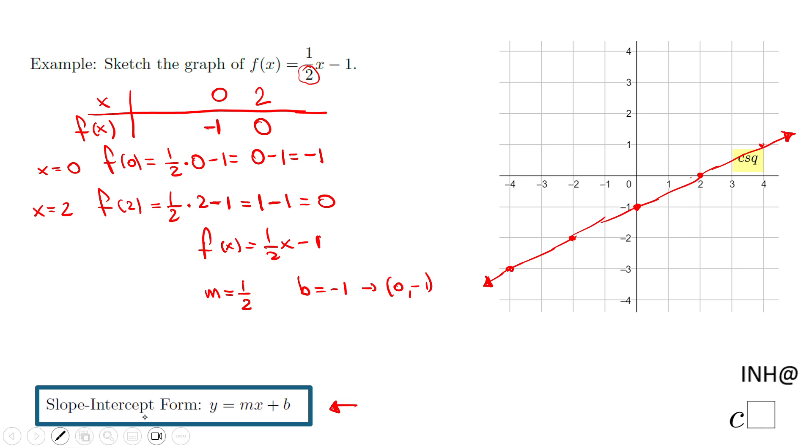right here. This is the y-intercept, (0, -1), and then I'm going to use the slope, going one up and two to the right, and you see you get the second point. So two ways to do the same